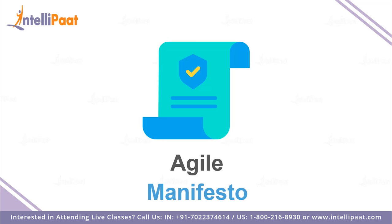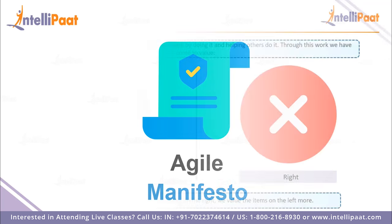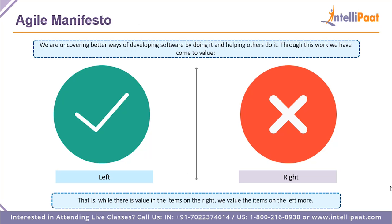These values come under the Agile manifesto. The Agile manifesto basically states that we are uncovering better ways of developing software by doing it and helping others do it. Through this work, we have come to value certain things. What I'm going to do here is show you the left side compared to the right side, as listed in the manifesto. The left side values have much more meaning than the right side values — while there is value in the items on the right, we value the items on the left more.